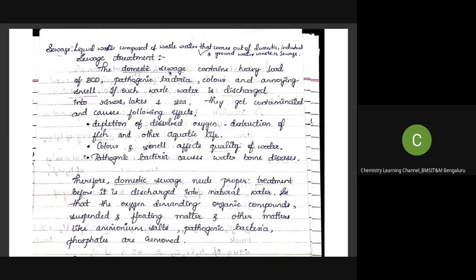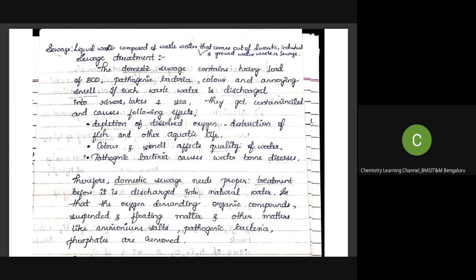Domestic waste contains a heavy load of biologically oxidizable impurities, pathogenic bacteria, bad color, and annoying smell. If such wastewater is discharged into water sources like rivers, lakes, and seas, they will get contaminated. This leads to depletion of dissolved oxygen, destruction of fish and aquatic life, and waterborne diseases caused by pathogenic bacteria. Therefore, domestic sewage needs to be properly treated.